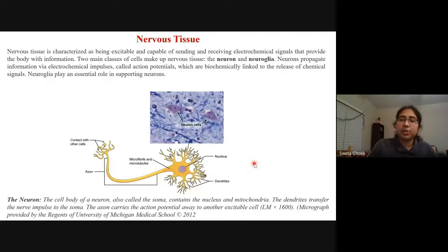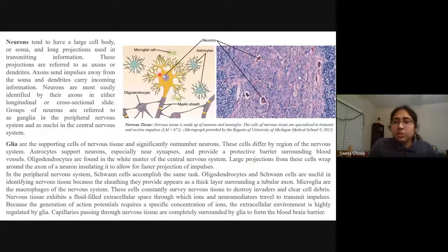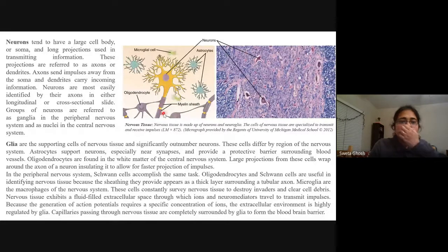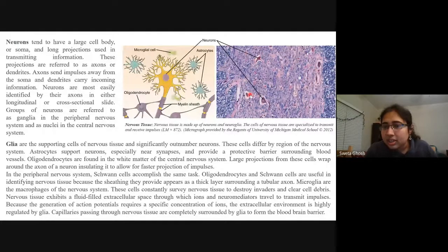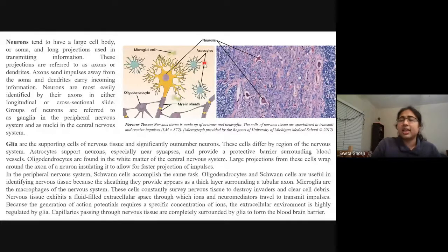Neuroglia play an essential role in supporting the neurons. Neurons have a large cell body called a soma, and axons protected by a myelin sheath that send impulses from the soma to the dendrites, carrying incoming information. Neurons are mostly easily identified by whether their axons are in longitudinal or cross-sectional view. Groups of neurons are referred to as ganglia in the peripheral nervous system and nuclei in the central nervous system. Astrocytes are part of the glia system and support neurons to send synaptic and electrochemical signals.